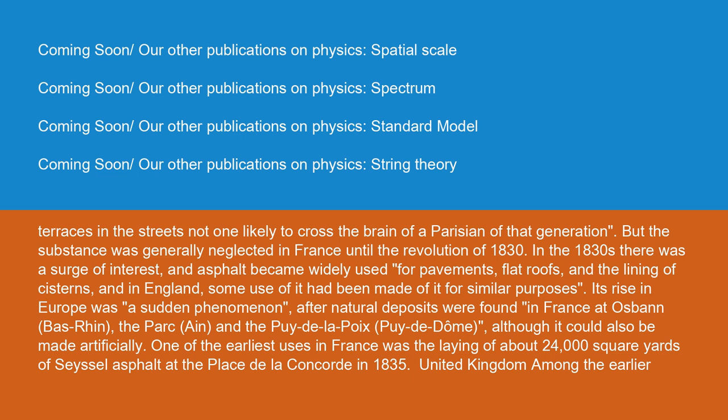In the 1830s, there was a surge of interest and asphalt became widely used for pavements, flat roofs, and the lining of cisterns, in both France and England. Its rise in Europe was sudden, after natural deposits were found in France at Osbann-Burin, Parc-Ain, and Puy-de-la-Peyre, Puy-de-Dôme, although it could also be made artificially. One of the earliest uses in France was the laying of about 24,000 square yards of sisal asphalt at the Place de la Concorde in 1835.